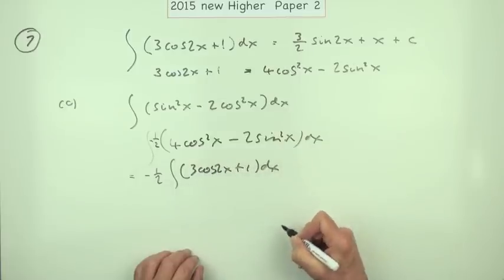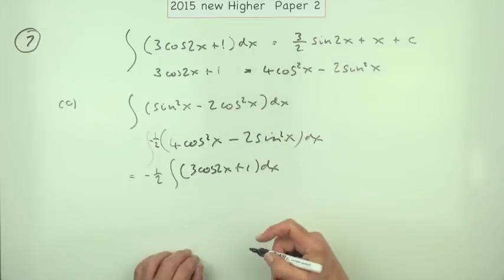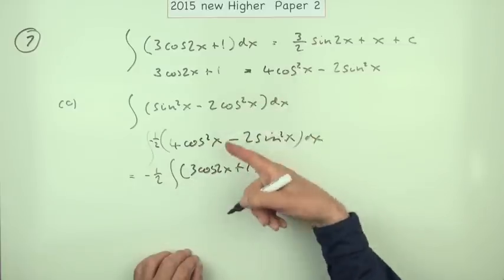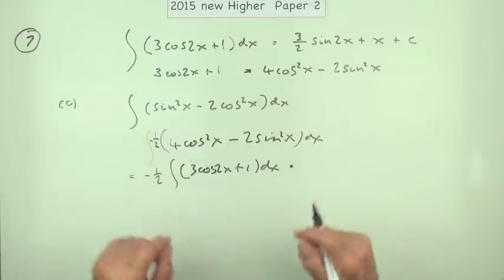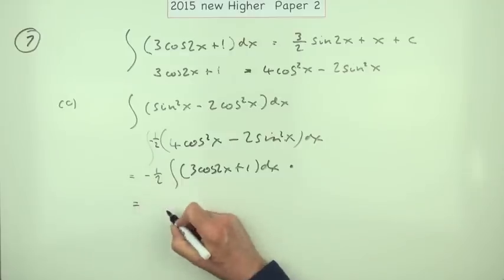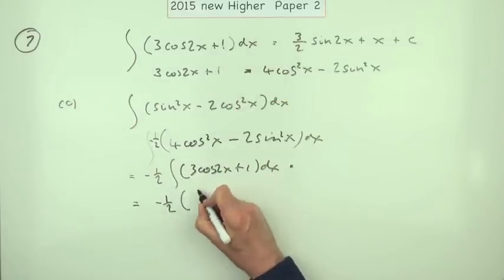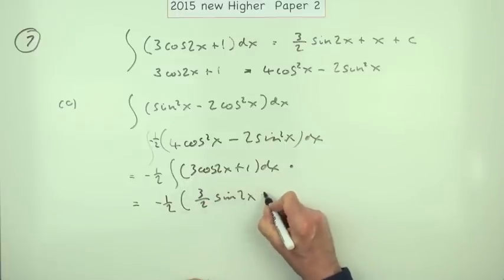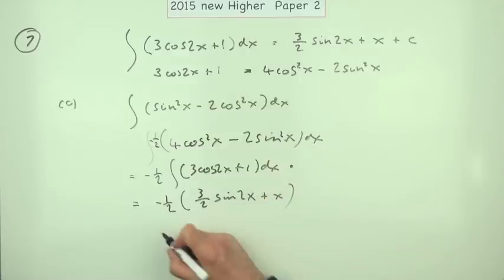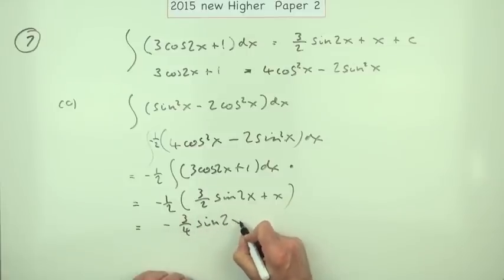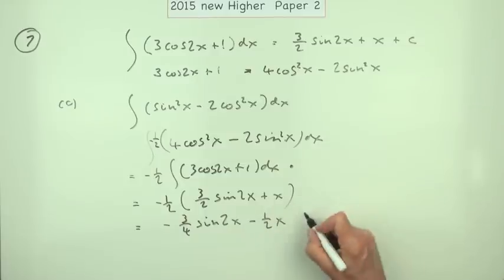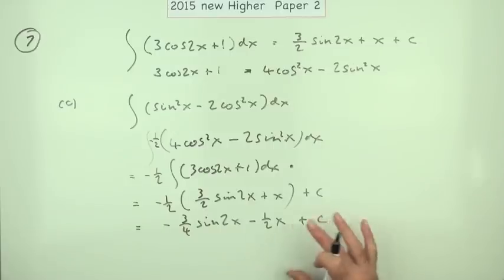Now the first mark here is to recognize the link between these two parts, either here or here, the negative a half being the multiple. And then it's just a case of saying, well, that means I've got negative a half over that would integrate to, and that would integrate to 3 upon 2 sin 2x plus x, so that gives me negative 3 upon 4 sin 2x minus a half x, and of course plus c, where c of course can be any number at all. And that's the second mark.